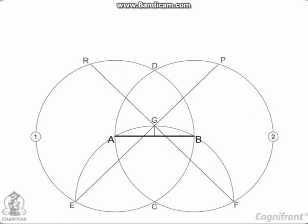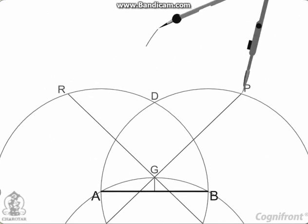After that, with P and R as centers and AB as radius, draw two arcs intersecting each other at point Q.